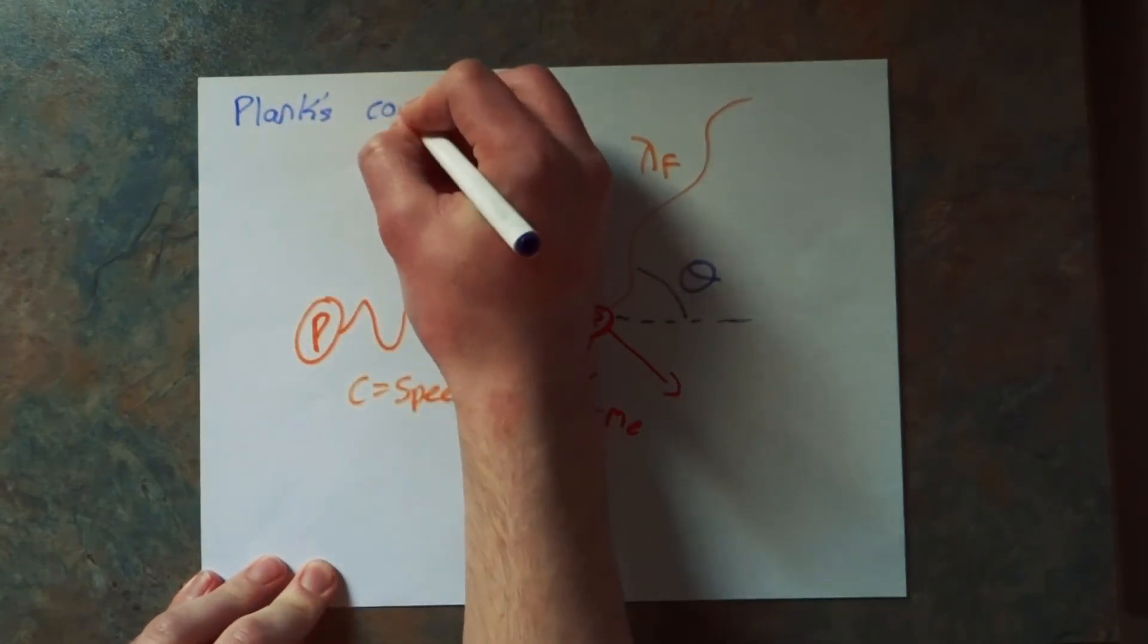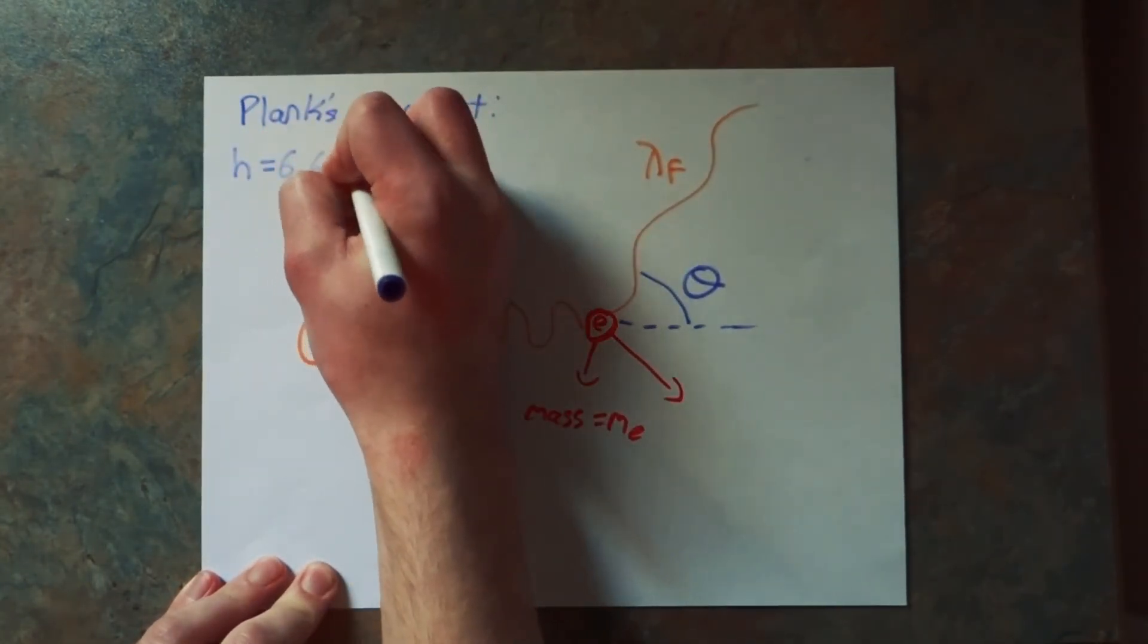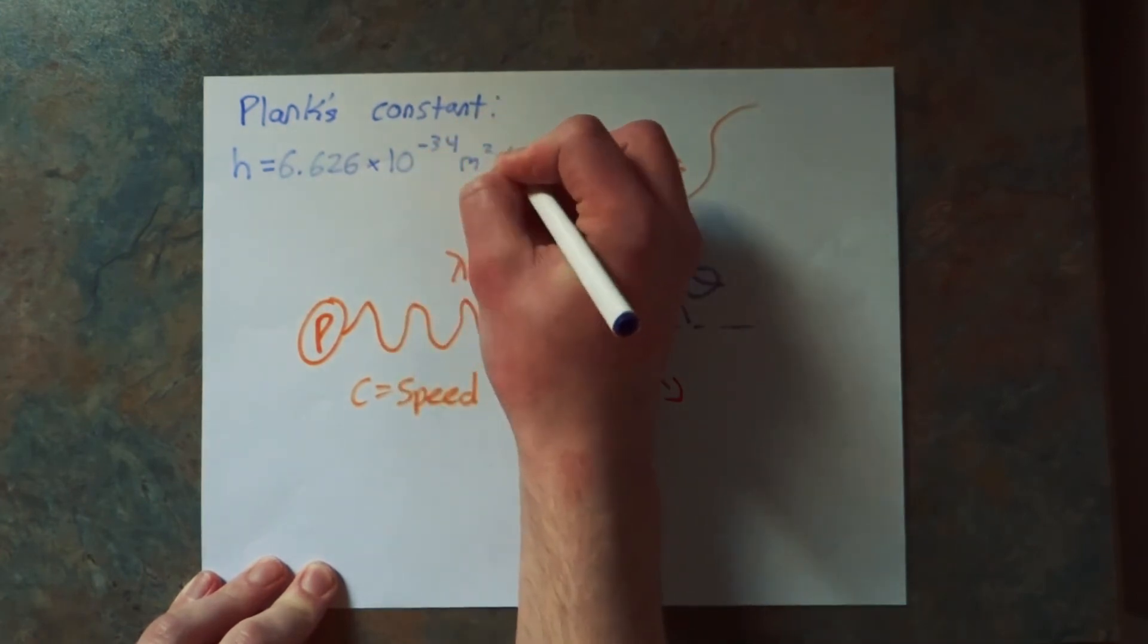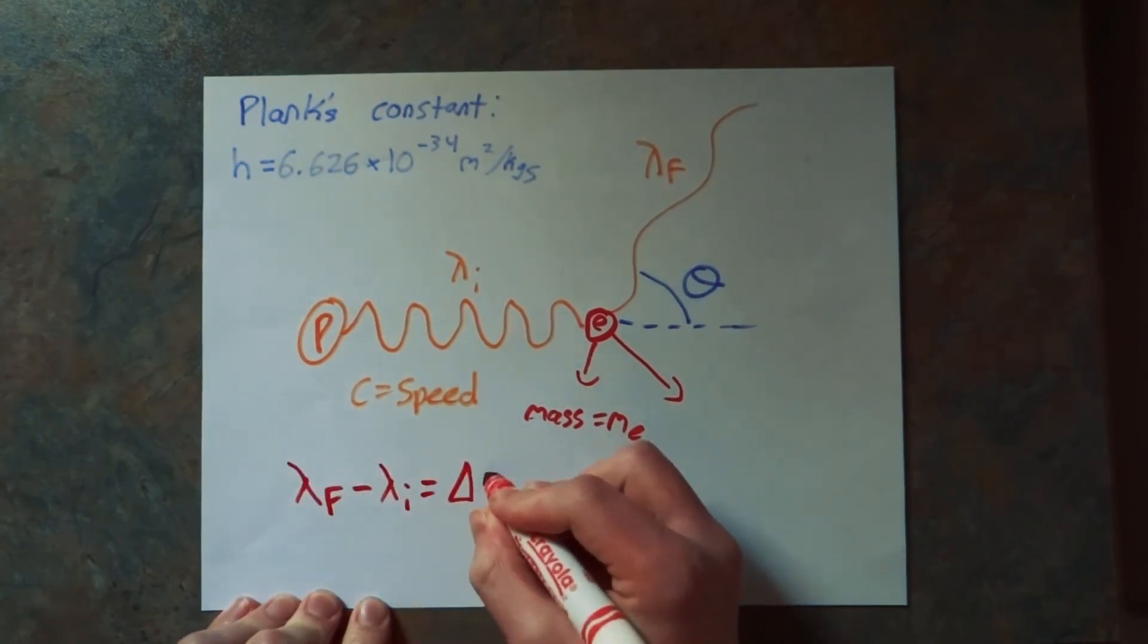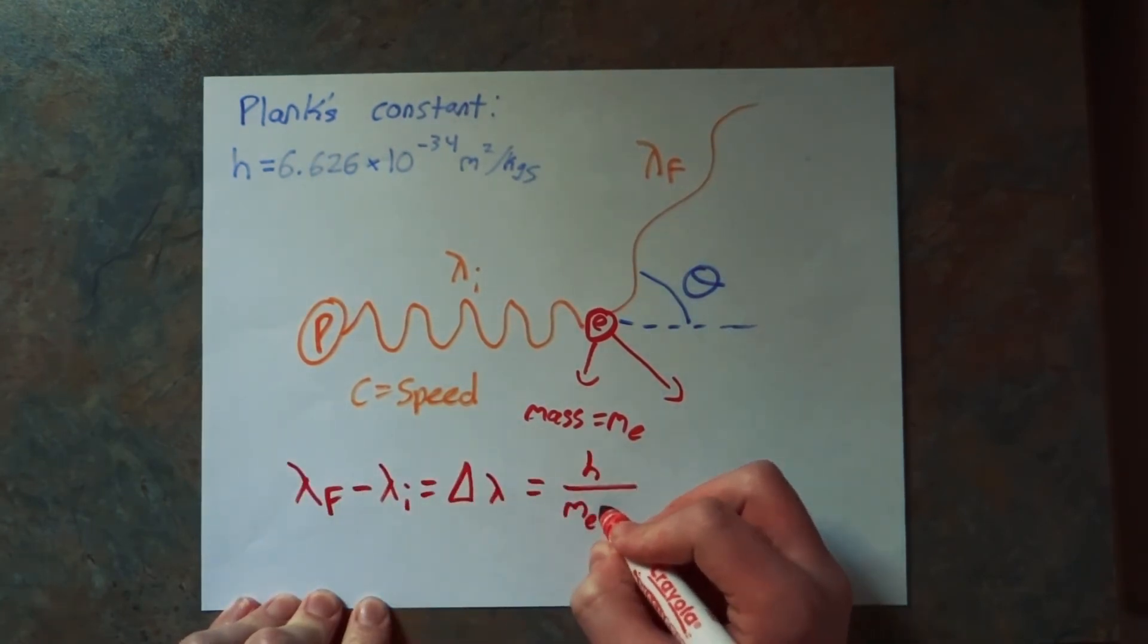In order to use the Compton formula, you also need Planck's constant, which is written as h. The Compton formula is change in wavelength equals h over the mass of the electron times the speed of the photon, and then all that times 1 minus cos of the angle.